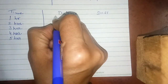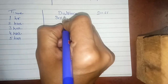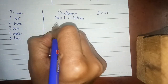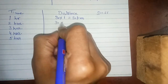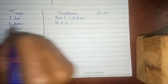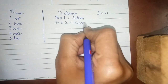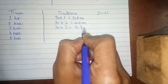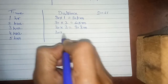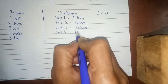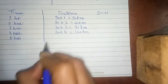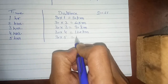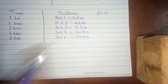For time = 1 hour, speed 30 × 1 = 30 km distance. For time = 2 hours, speed remains the same, 30 × 2 = 60 km distance. For 3 hours, 30 × 3 = 90 km distance. For 4 hours, 30 × 4 = 120 km distance. And for 5 hours, 30 × 5 = 150 km distance.